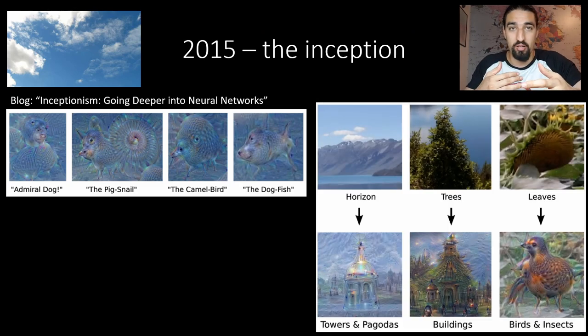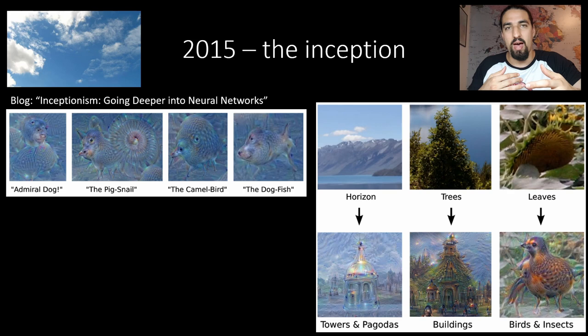The interesting thing is that depending on what you give to the network as input, for example if you give it some scene it will start populating it with towers or buildings and if you give it maybe a leaf or something it will start populating it with insects and animals.